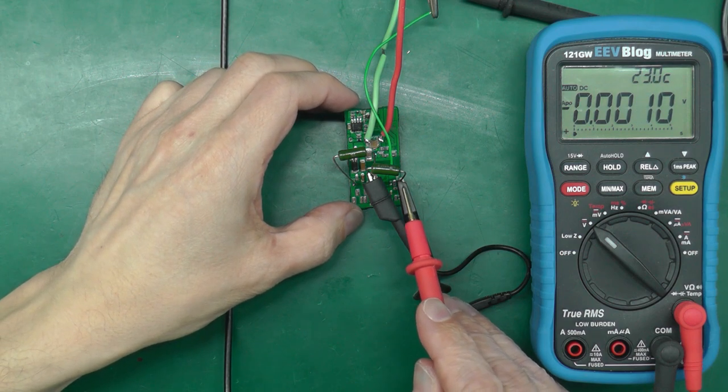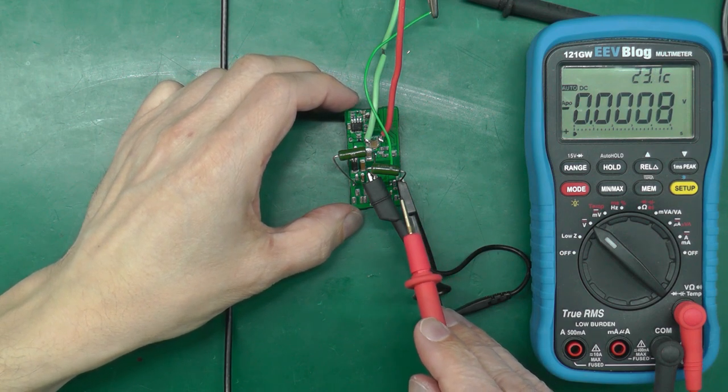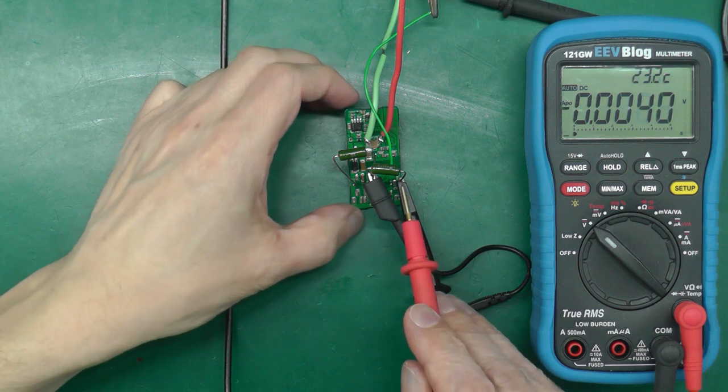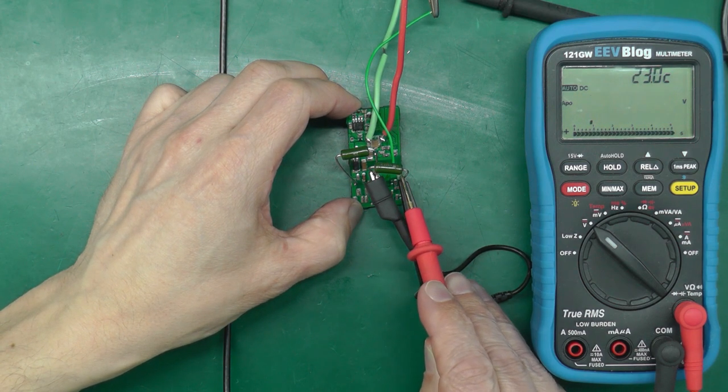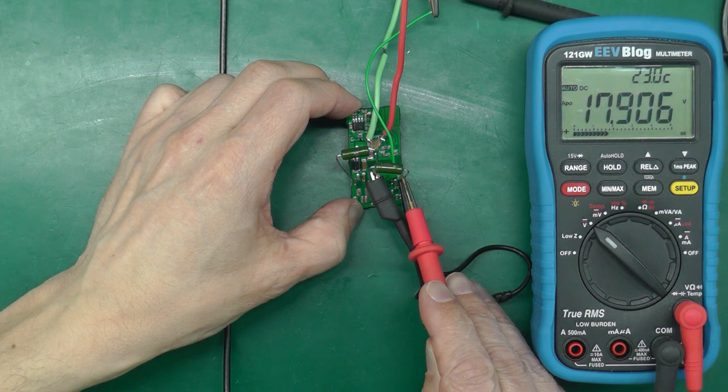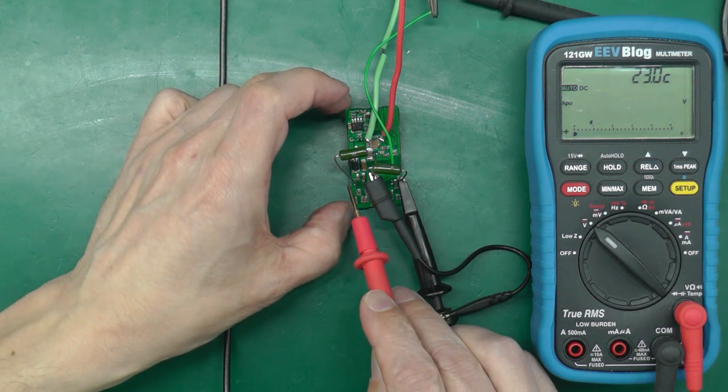With it under load now for about 15 minutes, the output just has not budged a single bit. As you can see, I'm still running at just under the 18 volts on the positive rail.